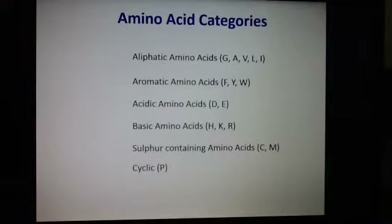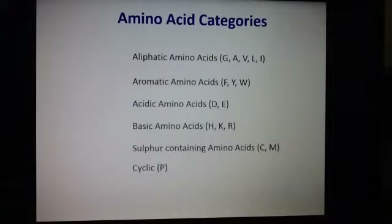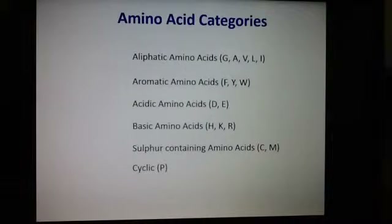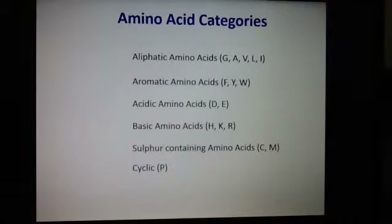We're looking at amino acid categories. The main things to know about aliphatic amino acids is that they are straight chains and they don't have phenol rings. Next, the aromatic amino acids do have phenol rings.